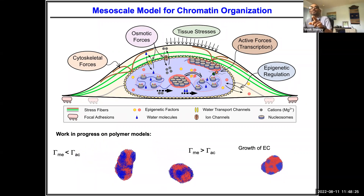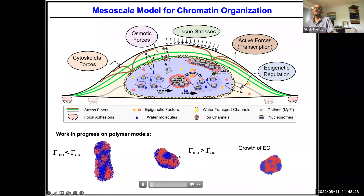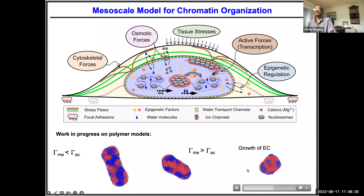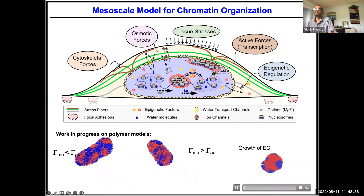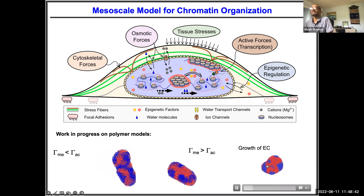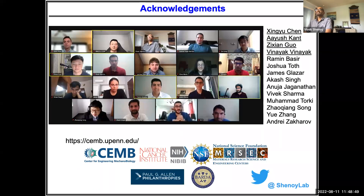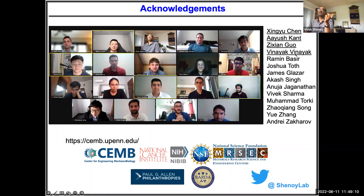We have polymer models showing this organization when you change methylation levels: higher methylation gives more red (heterochromatin), lower gives more blue (euchromatin). Changing stiffness as described earlier, you can see domains grow. This is work in progress. With that, I want to thank the people involved in this work — postdocs and graduate students in the lab — and I'll be happy to take any questions.